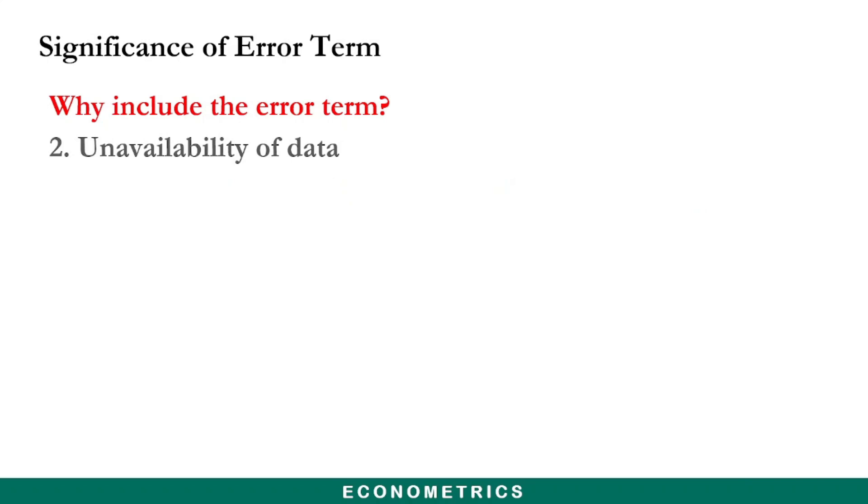The second one is unavailability of data. We may not have enough quantitative information about some variables we wish to observe in an econometric model. So these variables may not be included in the model, and we substitute the u parameter in their place.